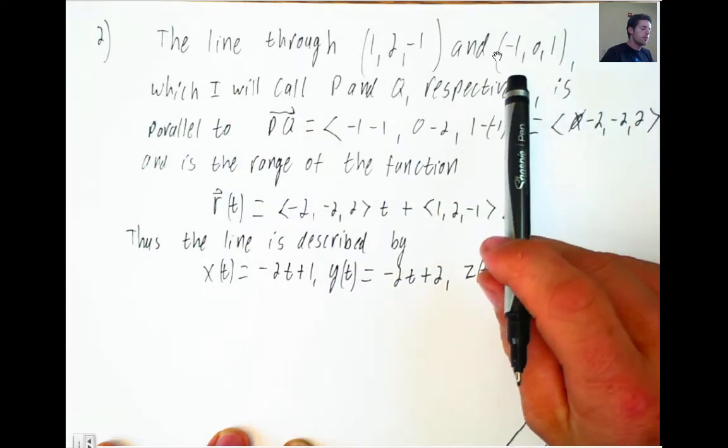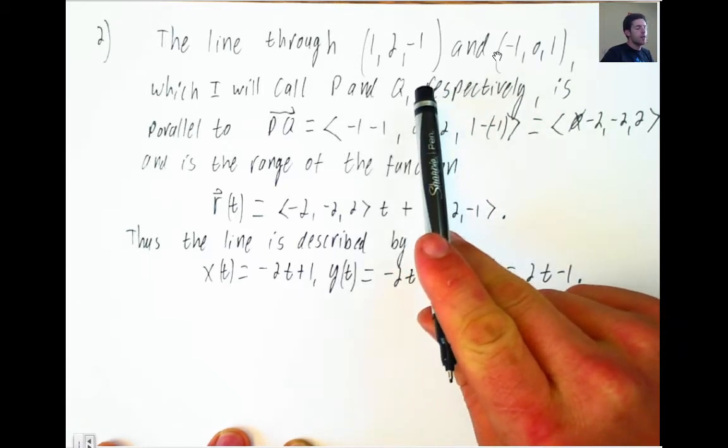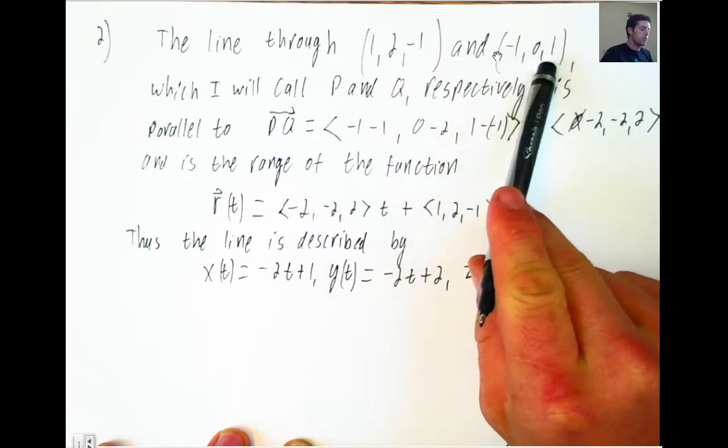For number two, I am supposed to find the parametric equations, plural, of a line that passes through (1, 2, -1) and (-1, 0, 1).